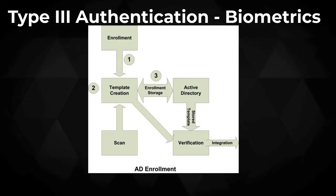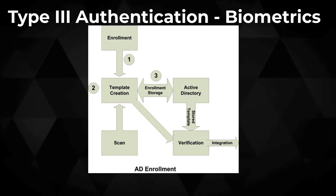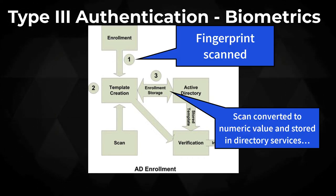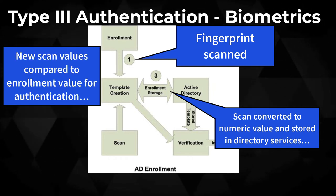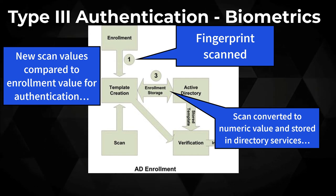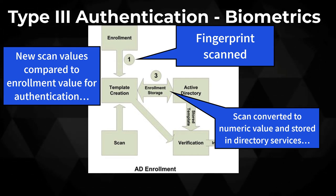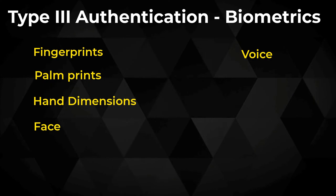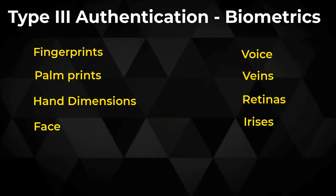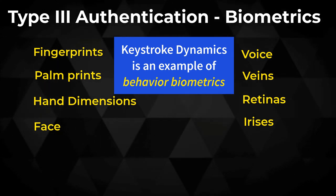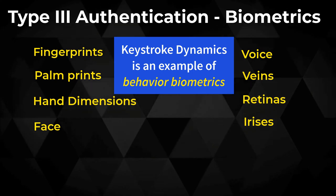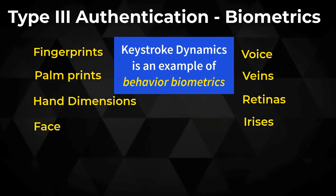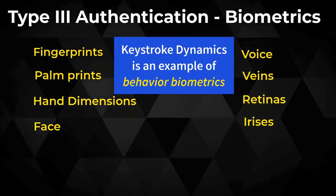Type 3 authentication uses what a user is — physical characteristics or behavior. Sensors map physical characteristics, convert them into a value, and compare that value to one stored when the user was enrolled in the biometric authentication system. Examples include fingerprints, palm prints, finger and palm dimensions, face, voice, veins, retinas, and irises. Behavioral biometrics includes how a user enters data into a system, known as keystroke dynamics. Biometrics are not a silver bullet — used alone, the risk is still higher than using only a password, and they are associated with two error types.